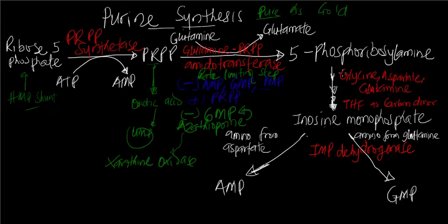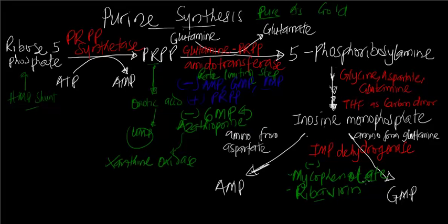You convert 5-phosphoribosylamine into inosine monophosphate by multiple steps requiring glycine, aspartate, and glutamine, and also carbon from tetrahydrofolate. AMP and GMP are formed from IMP by IMP dehydrogenase. Drugs like mycophenolate and ribavirin also inhibit IMP dehydrogenase. 6-mercaptopurine and azathioprine can be used for immunosuppression — to prevent organ rejection, for chronic inflammatory conditions like inflammatory bowel disease, lupus nephritis, and so on.